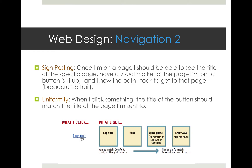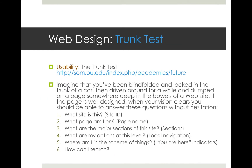Uniformity is really important when it comes to sign-posting and navigation. When I click something, the title of the button should match the title of the page I land on. For example, if I click 'Lug Nuts,' I want to land on a page that says 'Lug Nuts' — not 'Nuts' or 'Spare Parts,' even if lug nuts are on those pages. Always match the labels. The worst of the worst is a 'Page Not Found' error — it's sometimes unavoidable when something breaks, but it's a really easy flaw to point out in a usability test or lab report.